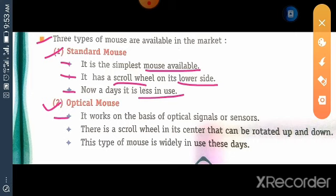First one, it works on the basis of optical signals or sensor. Next, there is a scroll wheel on its lower side. There is a scroll wheel in its center that can be rotated up and down. This type of mouse is widely in use this day.